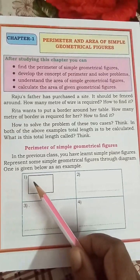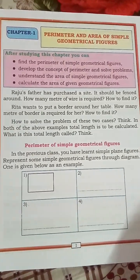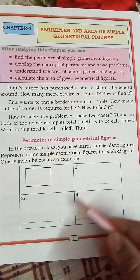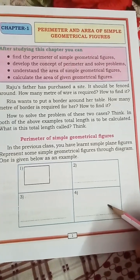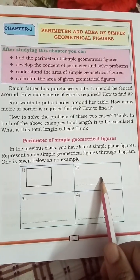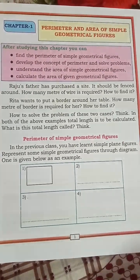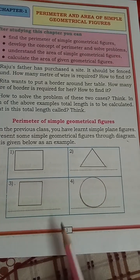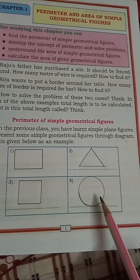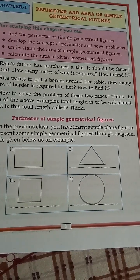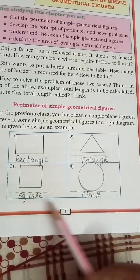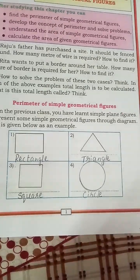Here a rectangle shape is given. We can also draw a triangle, square, and circle. So the figures are: rectangle, triangle, square, and circle. You can copy the same thing to your textbook.